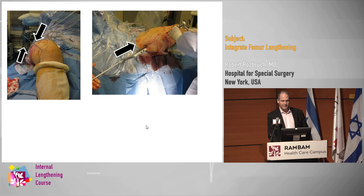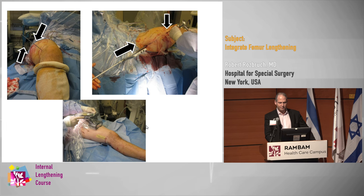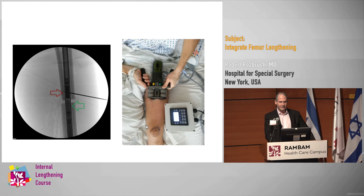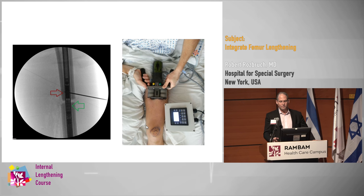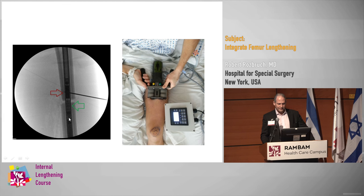This is what the nail looks like going in. The nail is at the osteotomy; the osteotomy is being completed, and then at the end of this process you do a trial distraction in the operating room. You identify the magnet, make a mark on the skin, draw the footprint of the ERC — the external remote control device — and you can do one millimeter of distraction to confirm that the nail is working.